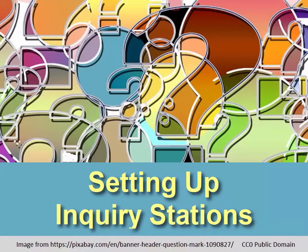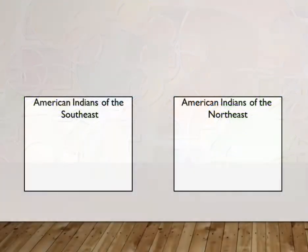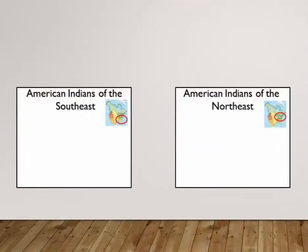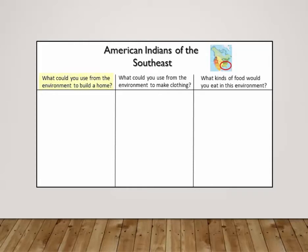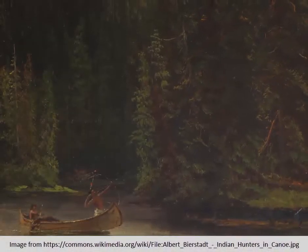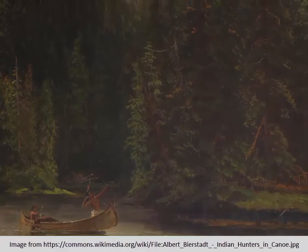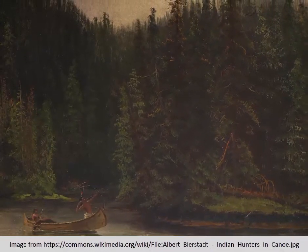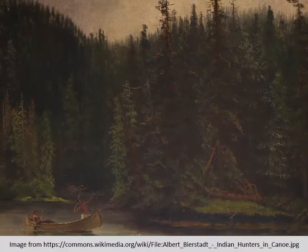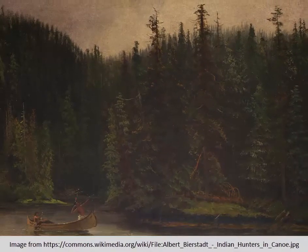Once you have collected images that provide an overview of the natural environment of each region, you will set up six inquiry stations, one for each region. Each station needs a chart labeled with one region and a map of North America highlighting this region. The chart should also have three sections labeled with the following questions: What could you use from this environment to build a home? What could you use from this environment to make clothing? And what kinds of food would you eat in this environment? In addition to the chart, students will be provided with pictures from one region. When introducing the stations to students, explain that they are trying to figure out how early American Indians survived in different regions. Remind students that they are thinking about a time thousands of years ago, long before grocery stores or shopping malls or hardware stores. Everything these people needed to get food, clothing and shelter had to come from the natural environment.